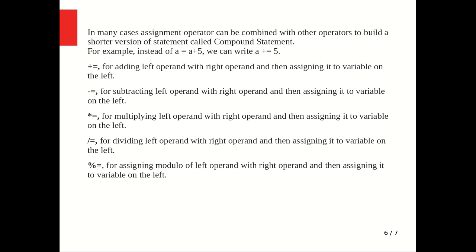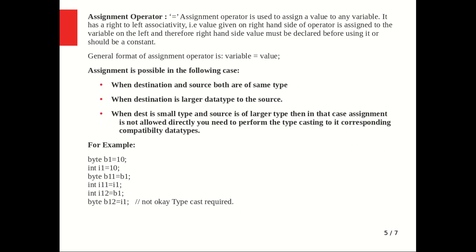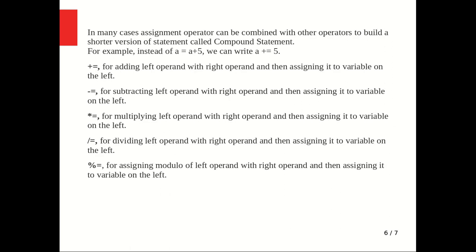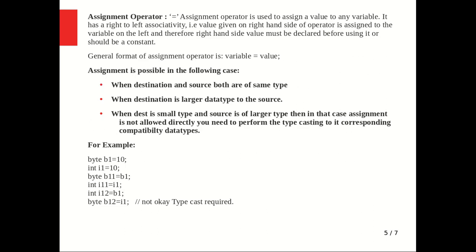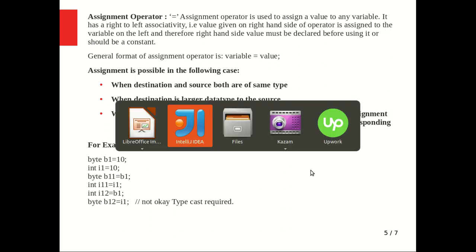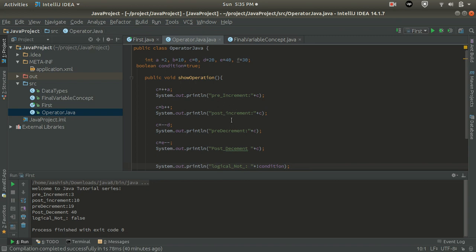To summarize, we have seen the assignment operator =. The rules are: when destination and source are the same type, when destination is a larger data type, and when destination is smaller than the source we must do typecasting — otherwise it will give a compile-time error. Next, we are going to see how to implement the assignment operator in a Java program.